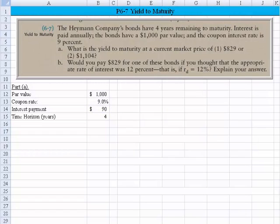Hi, everyone. Let's take a look at problem 6-7, which is a yield to maturity problem. We have the Heyman Company's bonds. They have four years remaining to maturity. Interest is paid annually. The bonds have a $1,000 par value, and the coupon interest rate is 9%. On part A, we're asked to solve what's the yield to maturity at a current price of $829, or $1,104.